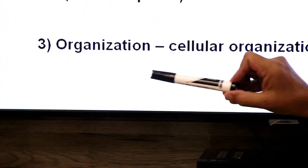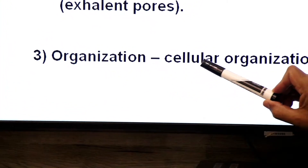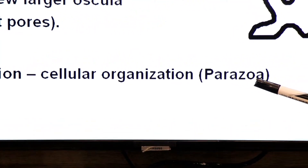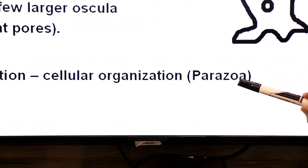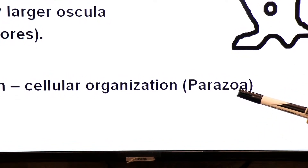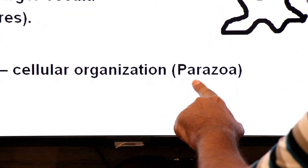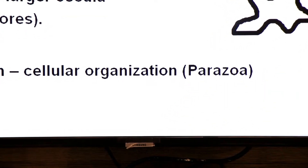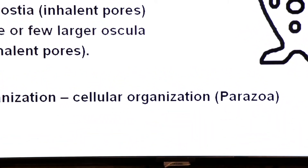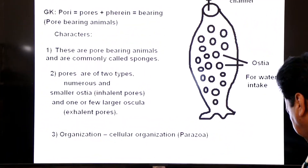Regarding the organization of sponges, they have cellular organization and belong to a group called Parazoa — a group of animals that has only cellular organization, but tissue organization is absent.